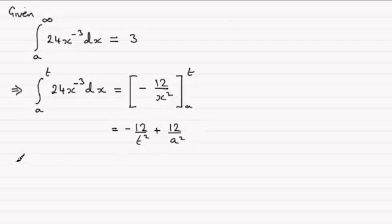Now what we do is we let t tend to infinity in situations like this. So as t tends to infinity, we're going to now have the integral from a to infinity of 24x to the power minus 3 integrated with respect to x.